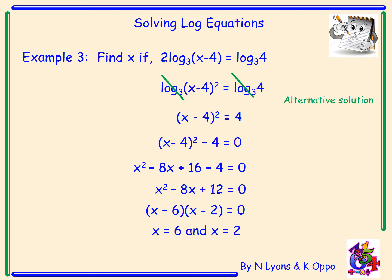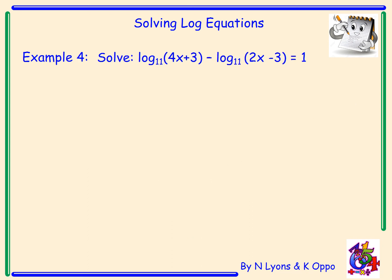An alternative solution: from (x − 4)² = 4, take the square root of each side — x − 4 = ±2. Remember when you take the square root there are two solutions: the positive and negative versions, because (+2)² = 4 and (−2)² = 4. That gives x = 6 or x = 2, since 6 − 4 = 2 and 2 − 4 = −2. Both methods are valid — use whichever you're more comfortable with.